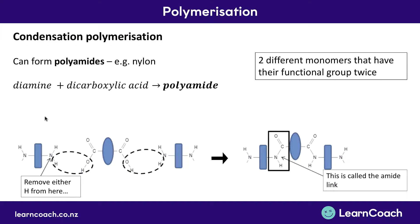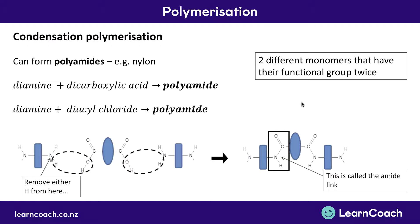So we have a diamine — a two-sided amine — plus a dicarboxylic acid — a two-sided carboxylic acid — going to a polyamide, which is a material like nylon. We could also do this with a diacyl chloride instead of the dicarboxylic acid. In the same way, instead of OH getting kicked off, you'd have the Cl group getting kicked off, so you wouldn't condense out water but hydrochloric acid, HCl. That's how you form polyamides.